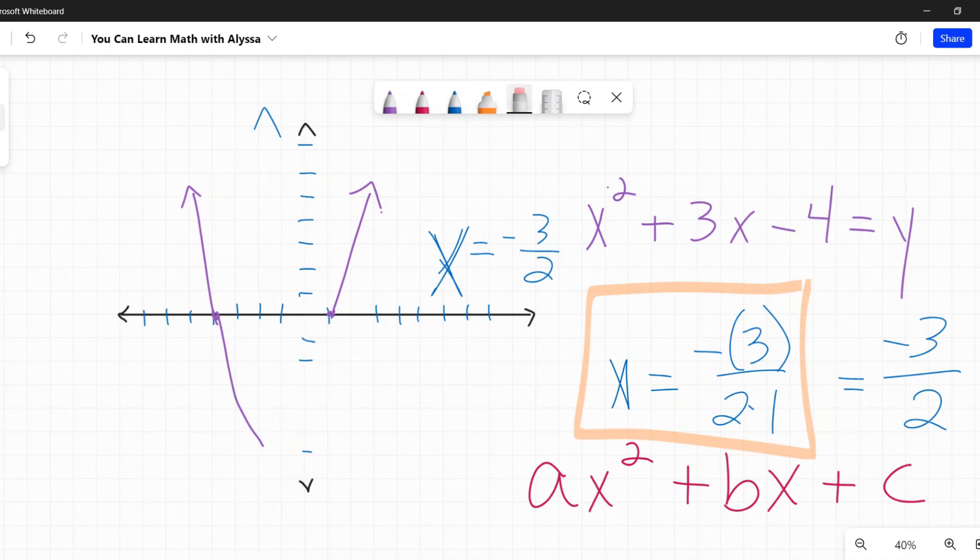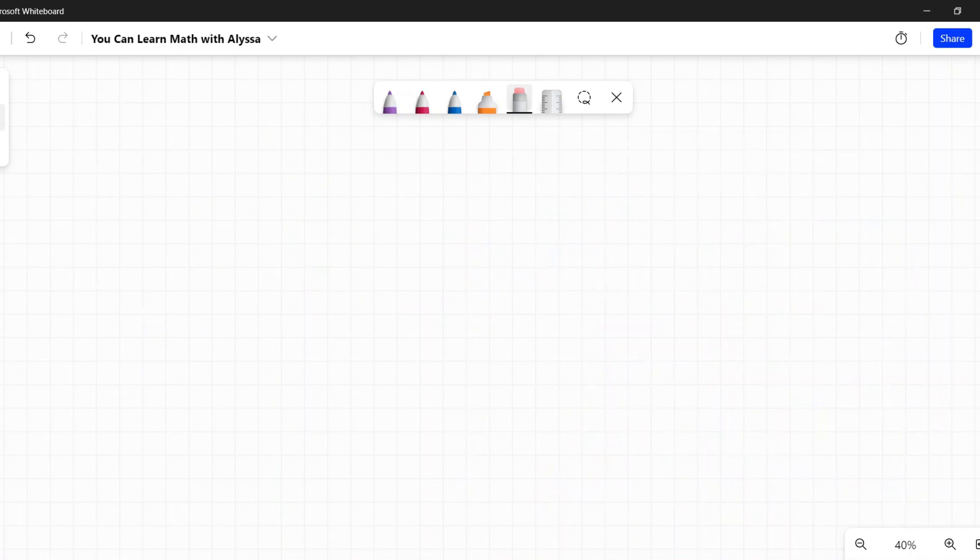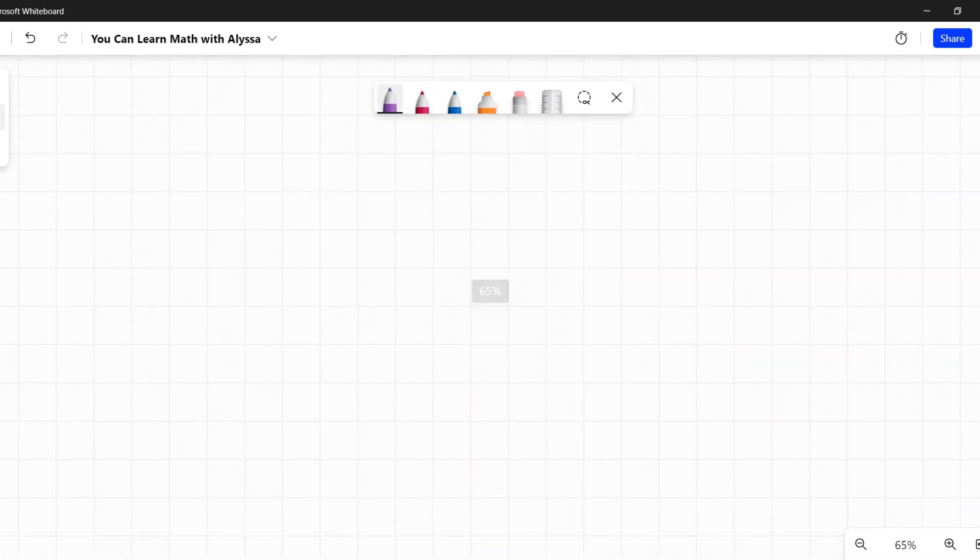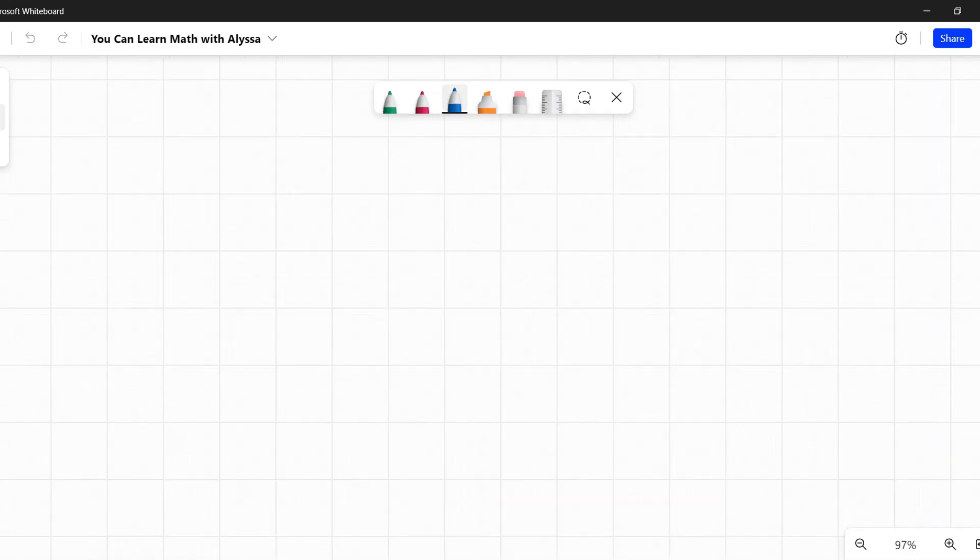So again, negative B over 2A, and you're not always going to have that graph. In fact, it's really unlikely that you're going to have a graph. That's really just to show you what the axis means. It's far more likely that you're just going to be given an equation and have them ask you what is the axis of symmetry.